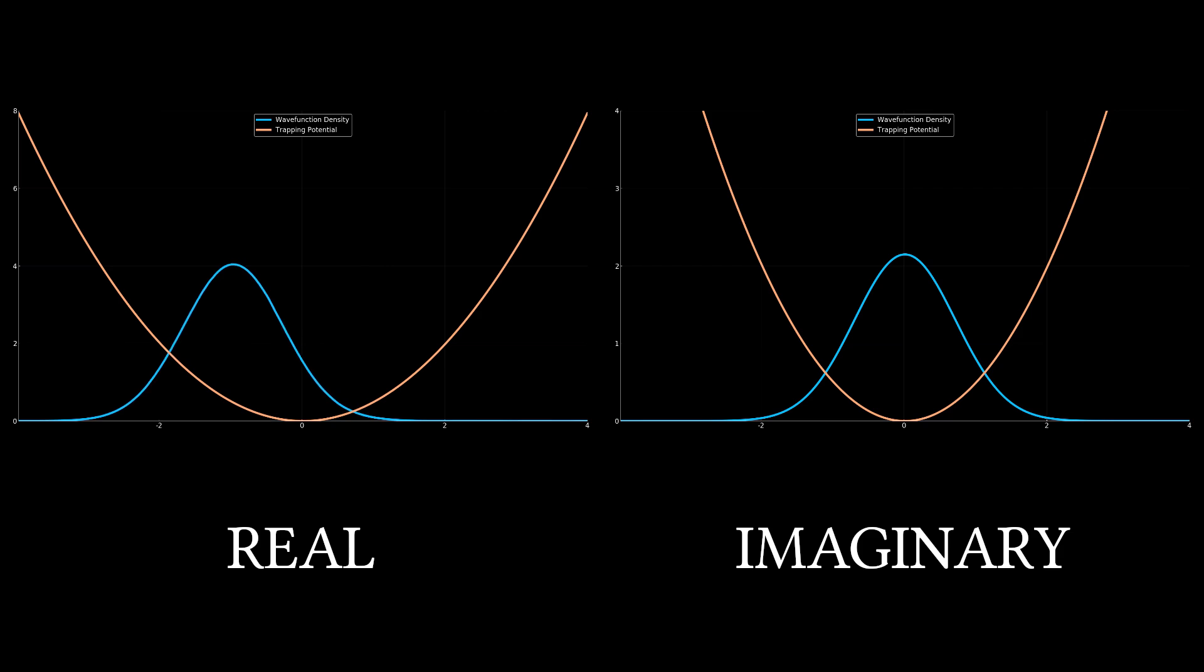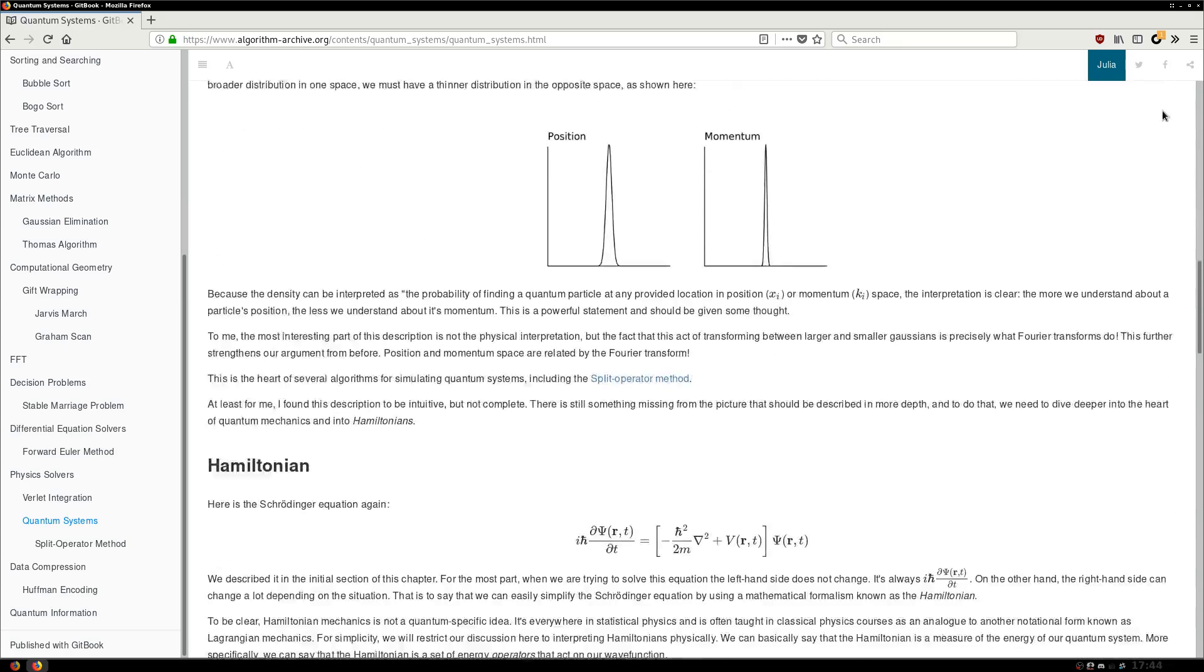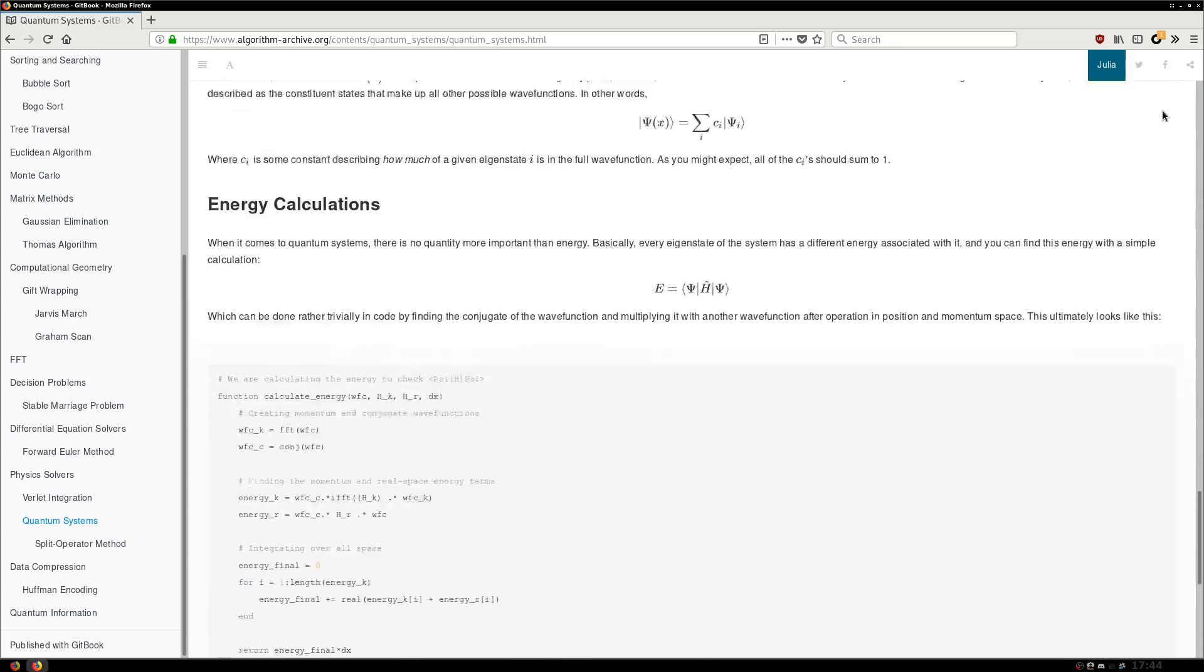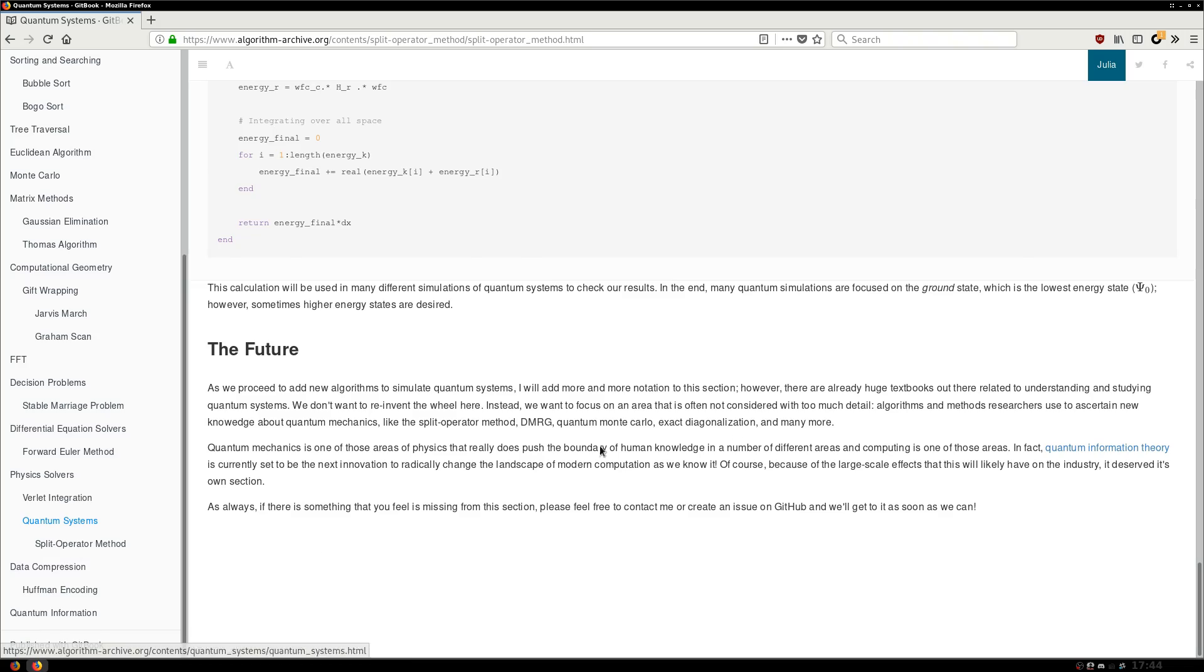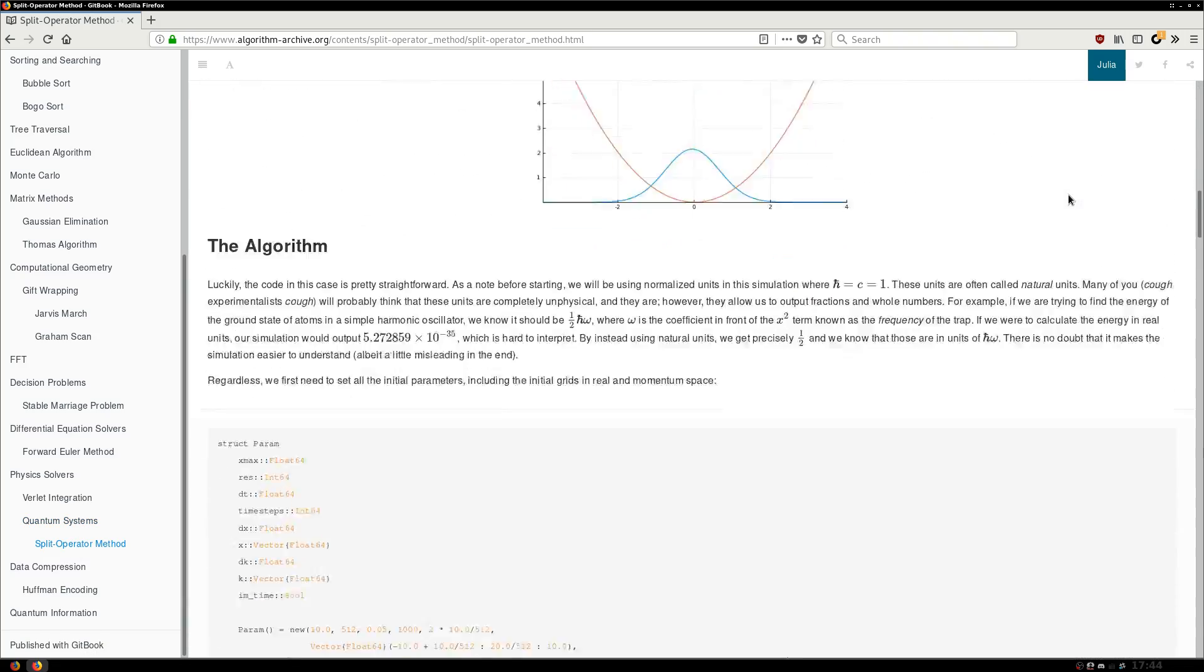Now, there are some implementation details I didn't cover here. However, that can all be found on the algorithm archive, which is currently awaiting language-specific implementations of both the split operator method and energy calculations for each quantum state. So, if you're up to the task, feel free to give it a shot and submit your code via pull request on GitHub.